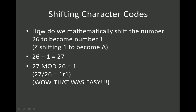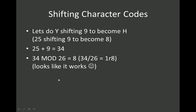Let's look at how we're going to do that. If I'm going to shift the letter Z by 1, I want it to become A. So 26 plus 1 is 27, and 27 mod 26 equals 1, because it's 1 remainder 1. That seems to work. Let's do Y shifting by 9 — the example from the Caesar cipher. We expect it to become H. So 25 plus 9 equals 34, and 34 mod 26 equals 8, because it's 1 remainder 8. This does look like it works.